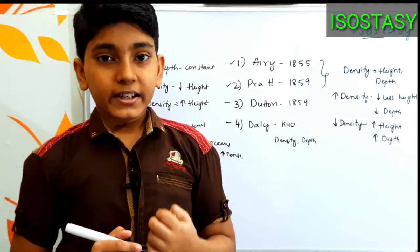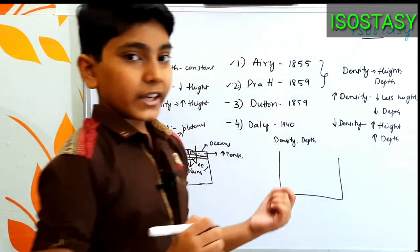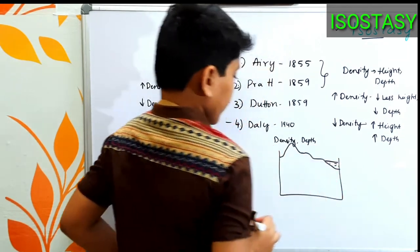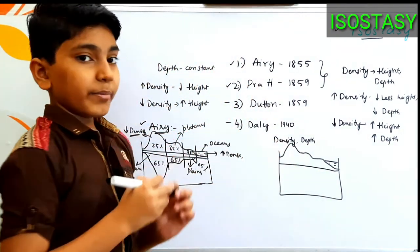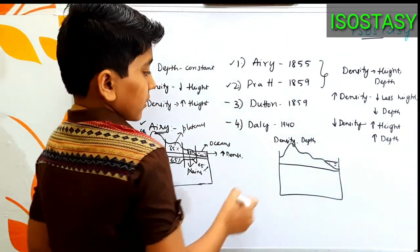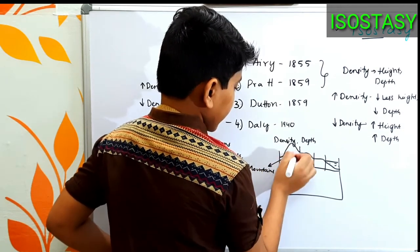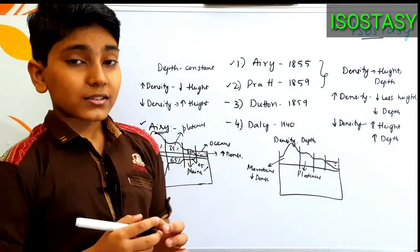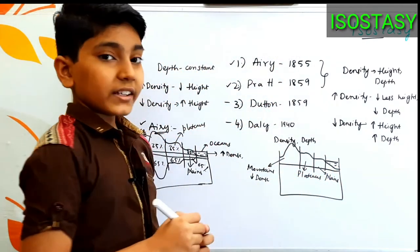Now let us come to Pratt's theory regarding isostasy. If you consider a part of the Earth, we experience mountains, plateaus, plains, and water bodies. As per Pratt, the depth is constant, but depending upon the density of the rocks we can define the height of the landforms. Mountains have higher elevations because they are made of less density rocks. They are followed by plateaus, which have denser rocks compared to mountains. Coming to the plains, we experience even denser rocks compared to the rocks in plateaus.